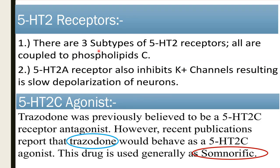5-HT2 receptor: there are three subtypes of the 5-HT2 receptor. 5-HT2A receptors also inhibit potassium channels, resulting in slow depolarization. Trazodone was previously believed to be a 5-HT2C receptor antagonist; however, recent publications report that trazodone has 5-HT2C agonist activity. This drug is generally used for somnipathic conditions related to sleep disturbance.